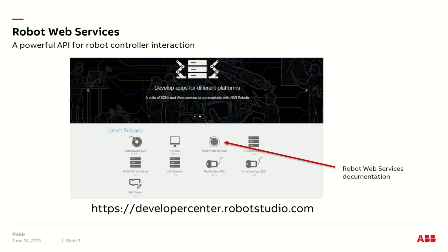Robot Web Services is a part of the controller software, so no installation on the client is necessary. The documentation can be found on the Robot Studio Developer Center website, as pointed out by the red arrow.